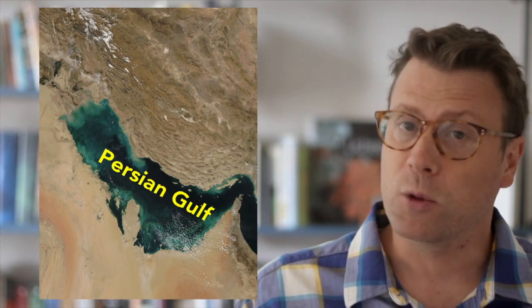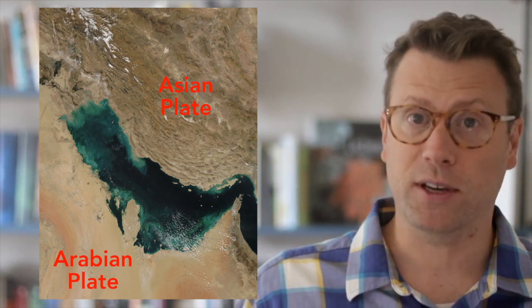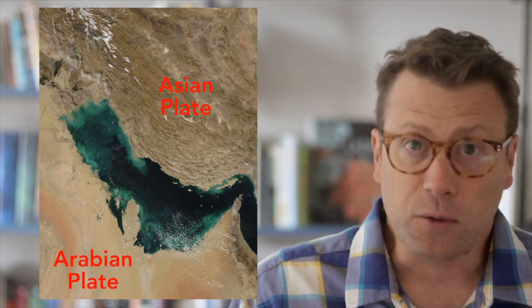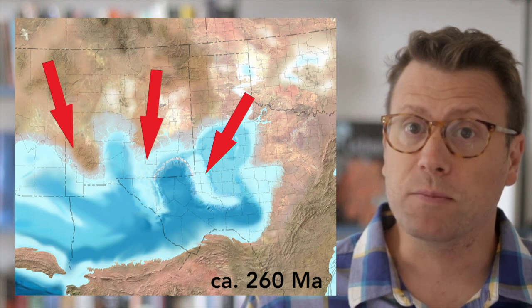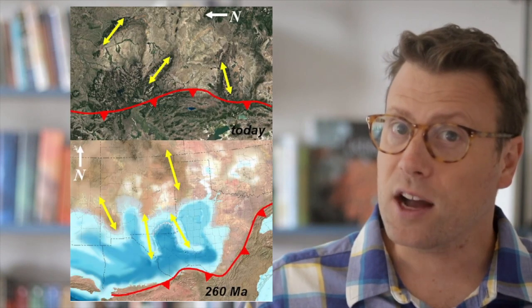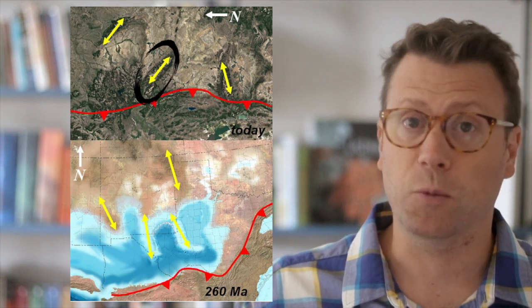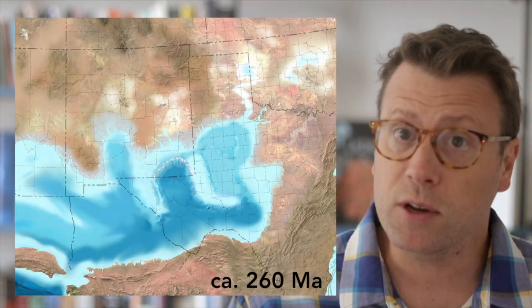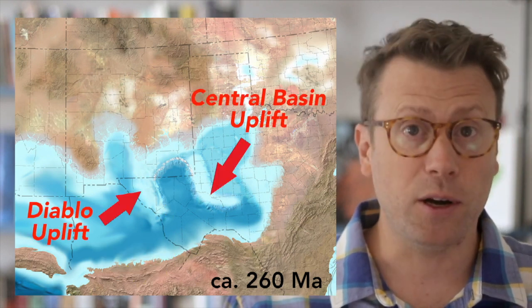A modern analog of the Permian Basin is the Persian Gulf in the Middle East, where the Arabian and Asian plates are colliding. The Arabian plate is being flexed downward by the overriding Asian plate to form a foreland basin filled with seawater. The Permian Basin was divided into several sub-basins by a series of underwater promontories and narrow peninsulas — actually large underwater mountains uplifted by reverse faults, likely analogous to the Laramide uplifts in Wyoming like the Bighorn Mountains and Wind River Range. The sub-basin that Capitan Reef formed in is called the Delaware Basin, flanked by the Central Basin uplift to the east and the Diablo uplift to the west.